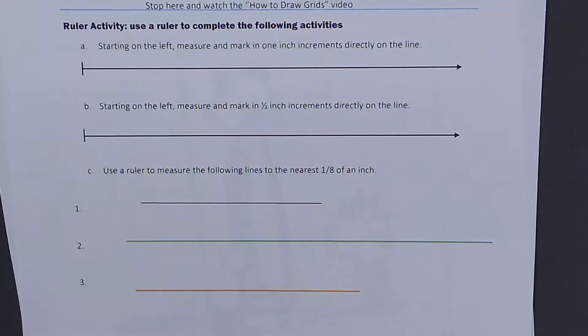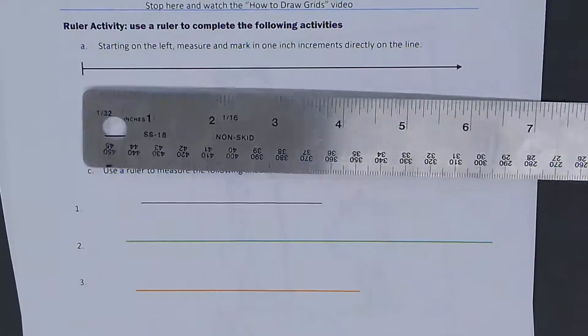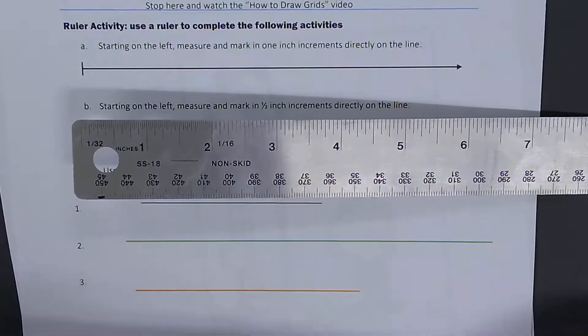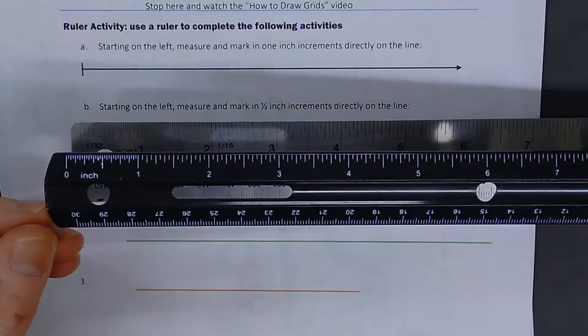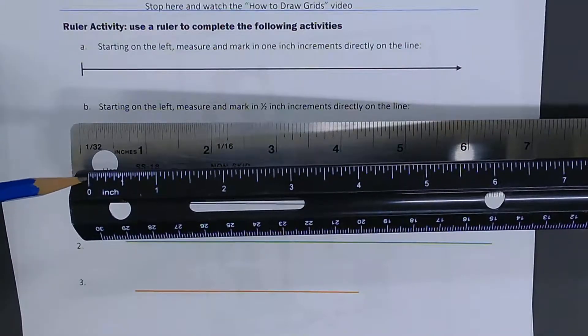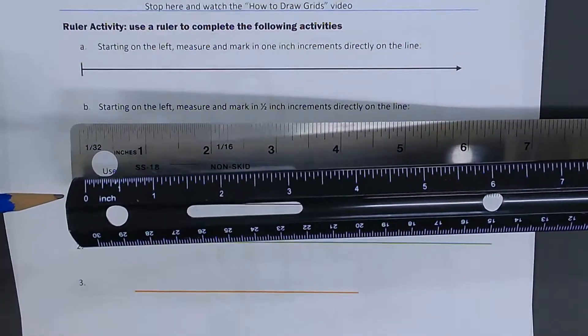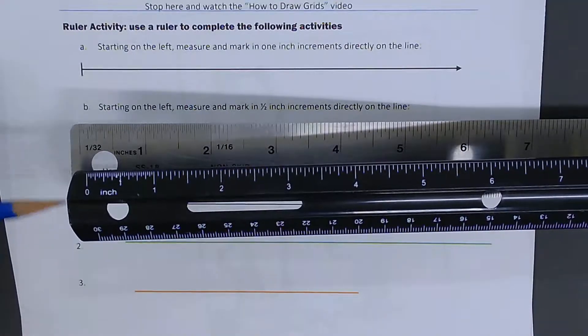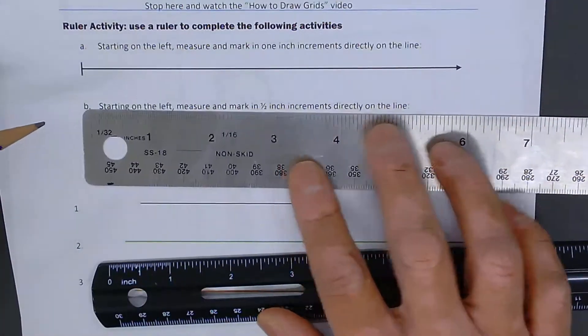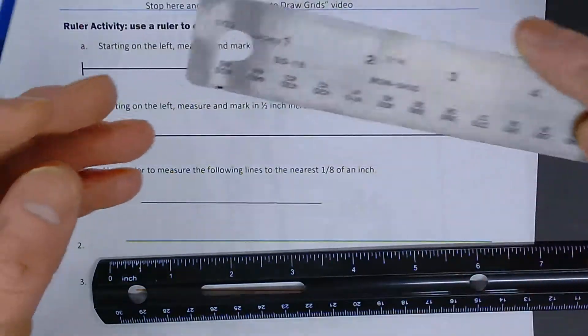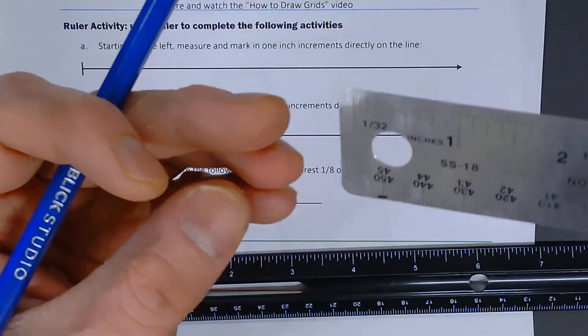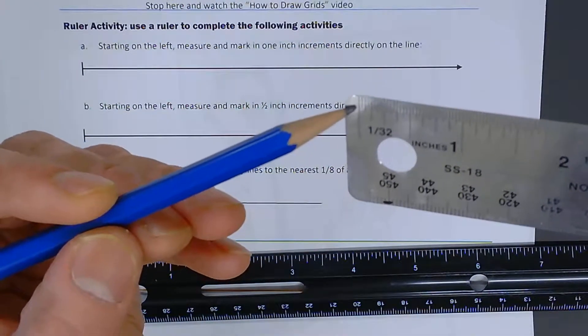Now we're moving on to the ruler activity. It says use a ruler to complete the following activities. Number one, starting on the left, measure and mark in one-inch increments directly on the line. What you might see in my ruler drawer is a metal ruler or a plastic ruler. I'm going to use a plastic ruler. Notice how this ruler starts right here - this is where your measuring starts. It doesn't start on this weird, non-rectangular, non-flat edge. It starts right on that line with a zero on it. That's the starting point right there.